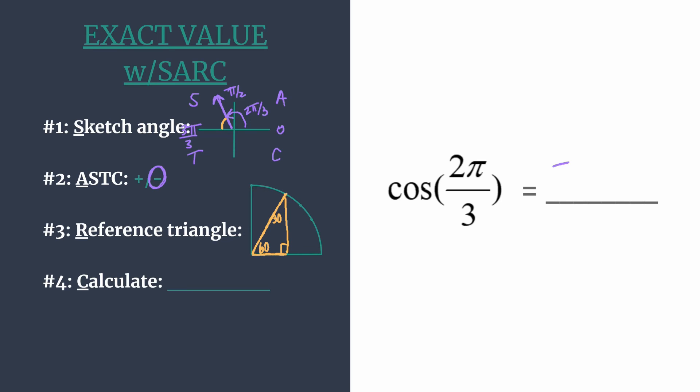It has the shorter leg horizontally, so our x for our ordered pair must be 1/2, and the longer leg vertically, √3/2.